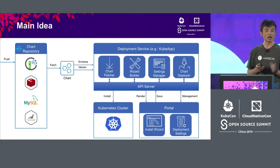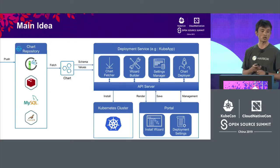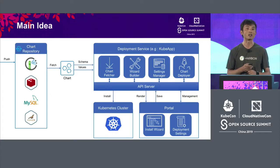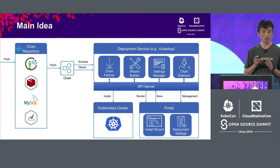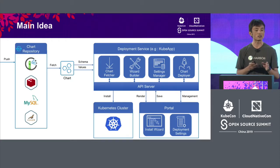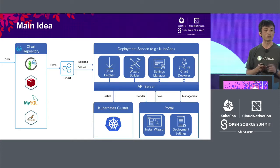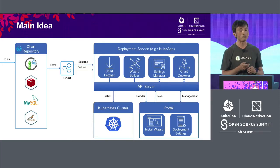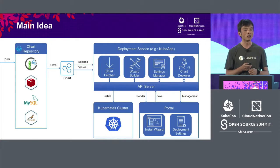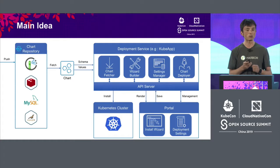My idea is to offer a deployment service. The deployment service will be triggered when you fetch a chart. From the chart, you can extract the values and schemas. Based on that, you will generate a standardized UI as well as a form list. You can output that to the UI side so that users may use the visualized wizard to do the customization. If you finish the customization settings, you may use the deployment service to deploy it to the target environment and store it as deployment settings. Those deployment settings can be repeatable.